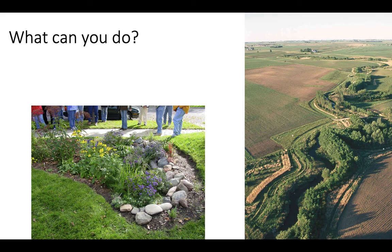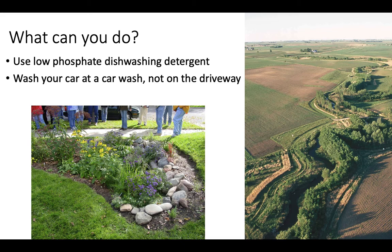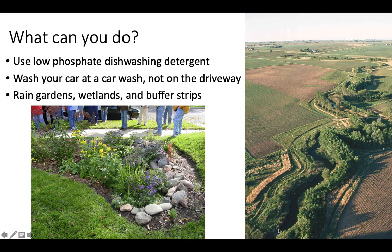What can you do to help reduce eutrophication? Use low-phosphate or no-phosphate dishwashing or laundry detergent. Wash your car at a car wash — they have special drains to collect runoff — not on the driveway where it'll run off into a sewage drain near a water source. Plant rain gardens, promote protection of wetlands, and build buffer strips alongside farms to reduce nutrient pollution reaching rivers. The big thing is to preserve and restore wetland ecosystems — something like 90% of Earth's wetlands have been destroyed or modified, which is a huge problem since wetlands filter and purify water and provide a wide variety of other ecosystem services.